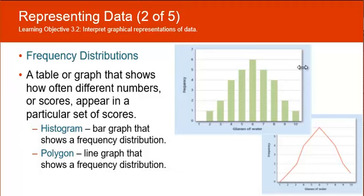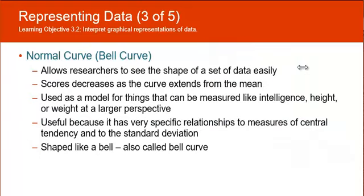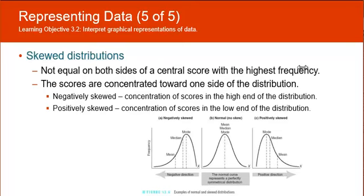This is done on the right set of data. It is shaped like a bell; that's why it's also called a bell curve. Sometimes this can be skewed, and we can have skewed distributions of data, which means that they're not equal on both sides of a central score with the highest frequency. Here's an example of a normal bell curve in the middle with no skew. Negatively skewed means that the data is in a negative direction; the concentration of scores are in the high end of the distribution. And then if it's the other way and you have a concentration of scores in the low end of the distribution, that means that it is a positive skewed data set.